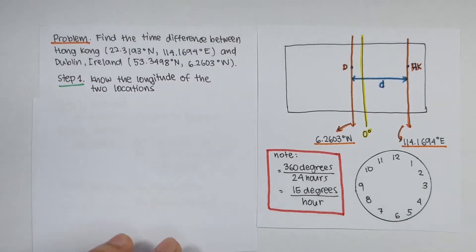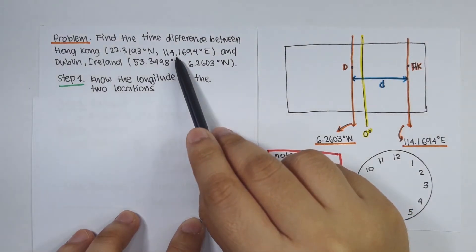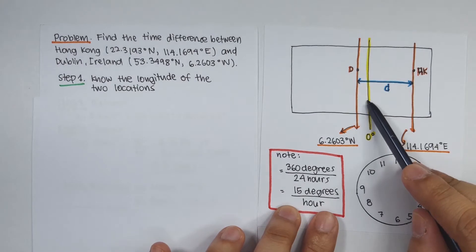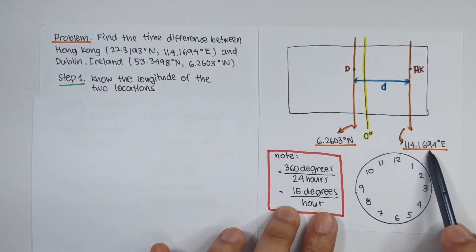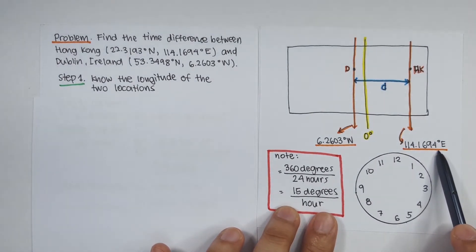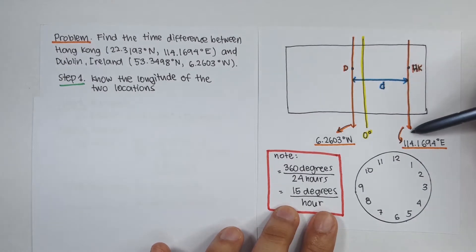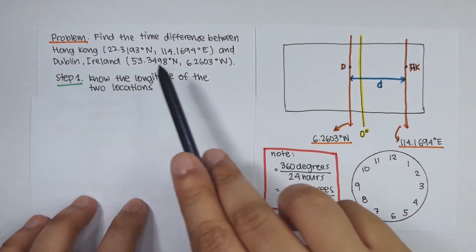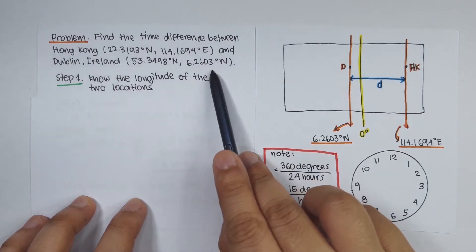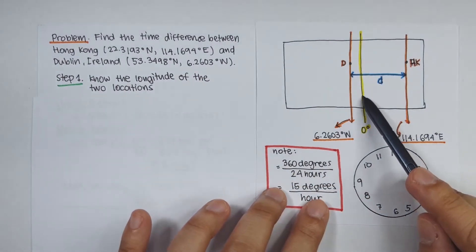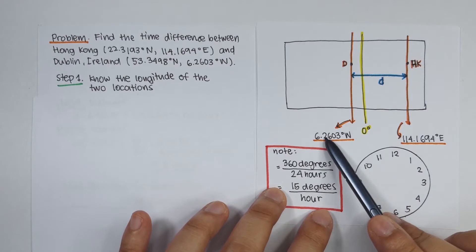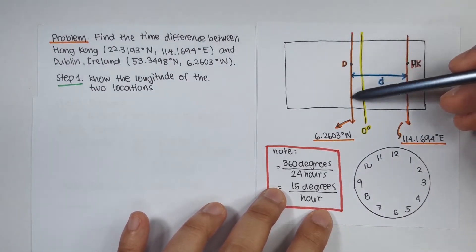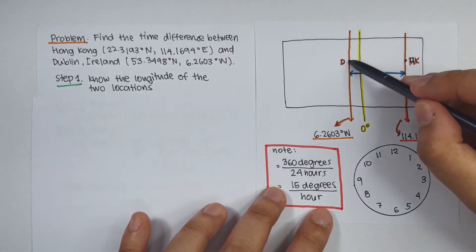Hong Kong is located at 114.1694 degrees east, so from the prime meridian you go 114.1694 degrees to the east — somewhere along this line is Hong Kong. Dublin, Ireland is located at 6.260 degrees west, so from the prime meridian you go 6.260 degrees to the west — somewhere along this line is Dublin.